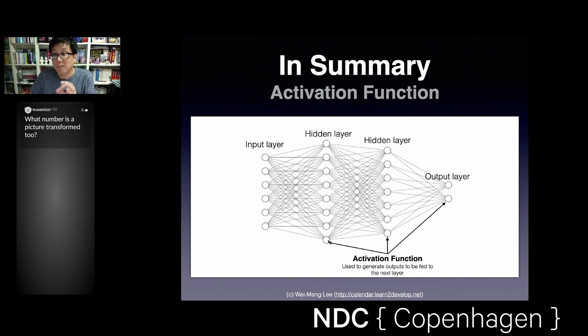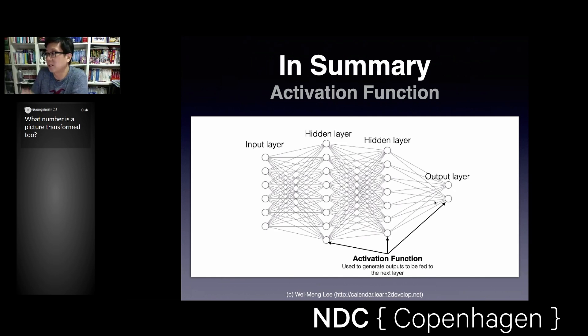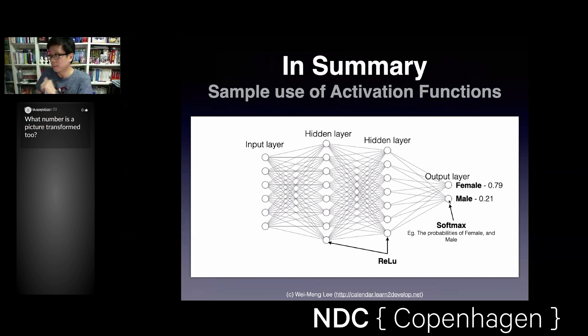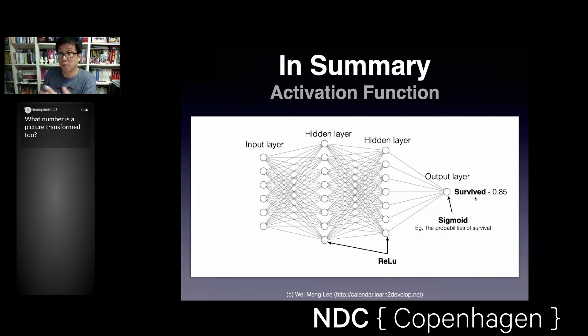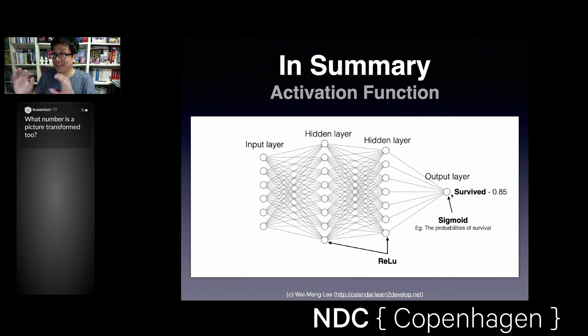In summary, we apply activation functions at the end of every layer. At the output layer, you use either a sigmoid activation function or softmax to distribute probabilities — for example, sigmoid for a single binary output or softmax to predict percent probability of male versus female. Once activation functions are covered, we move to loss functions. I'm going to speed things up a bit to make time for demos.